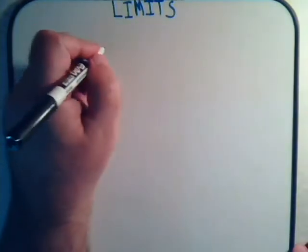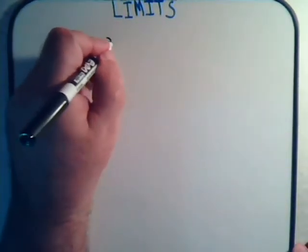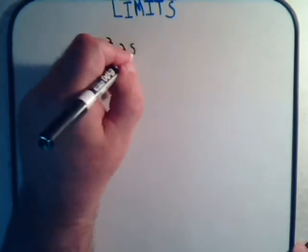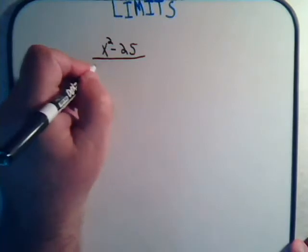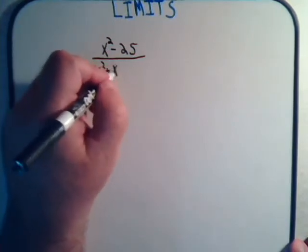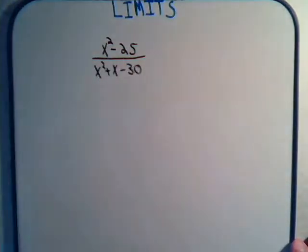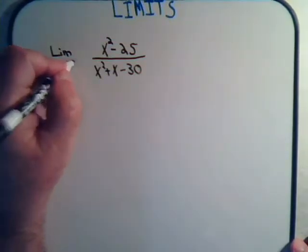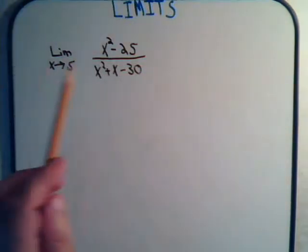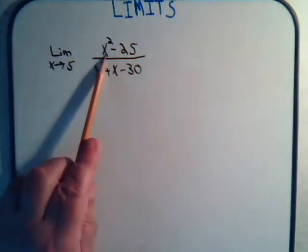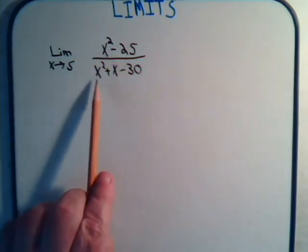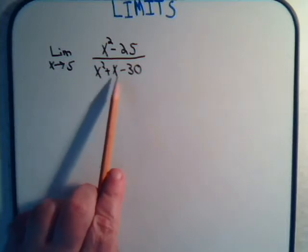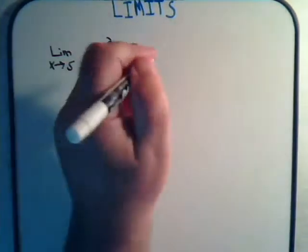The first problem is suppose we have x squared minus 25 divided by x squared plus x minus 30, and we want to take the limit of this as x approaches 5. Now, the first thing you can always do is plug the number in and see if you get a reasonable answer. Up here we're going to have 25 minus 25 is 0, not a good start. And down here we're going to have 25 plus 5 is 30 minus 30, and again we're getting this equals 0 over 0.